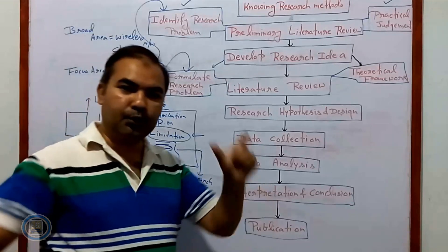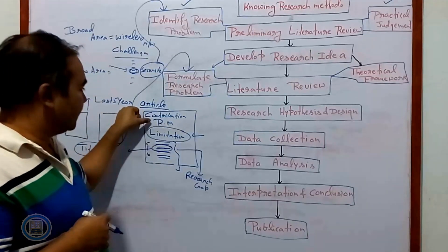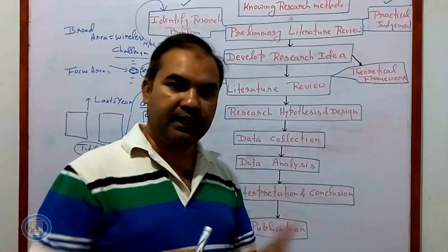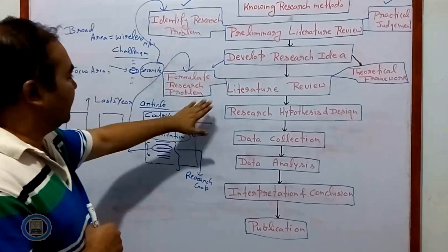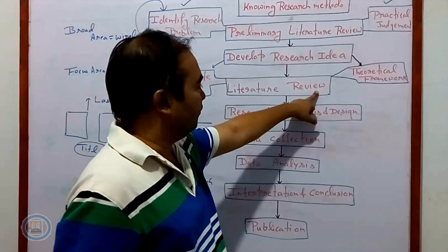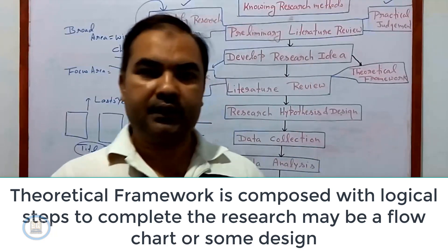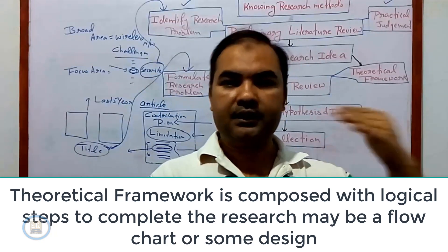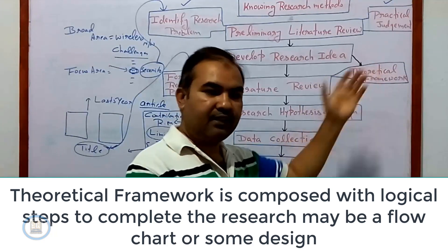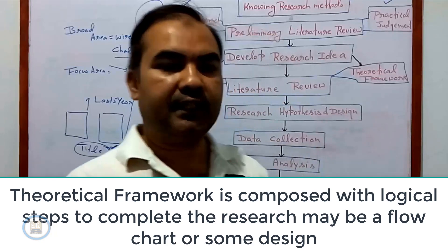You are now formulating your research problem — identifying exactly what you want to do and how to do it. From the literature review, you have collected information about contributions and research methodology. You can follow an existing methodology or develop your own. Next, from your research idea and literature review, you can develop a theoretical framework, dividing your research into logical steps. The theoretical framework is not compulsory, but it helps you complete the research and identify facts and conclusions.